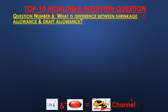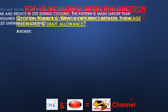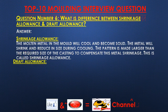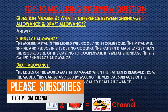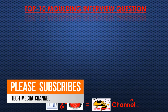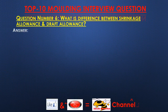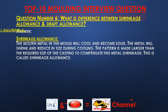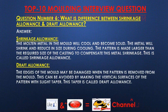Question number six: What is the difference between shrinkage allowance and draft allowance? Answer: Shrinkage allowance — the molten metal in the mold will cool and become solid. The metal will shrink and reduce in size during cooling. The pattern is made larger than the required size of the casting to compensate for this metal shrinkage. This is called shrinkage allowance.